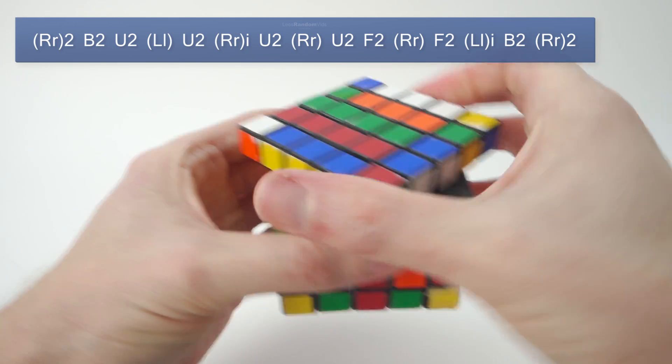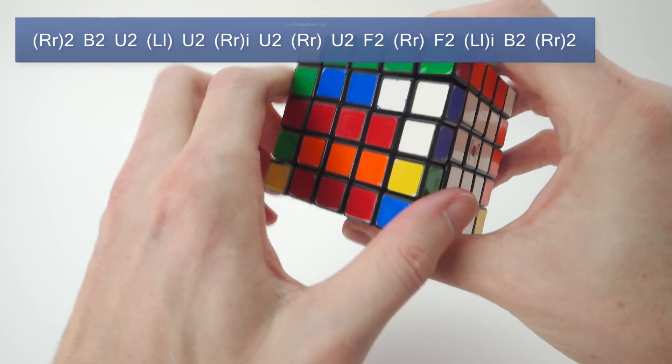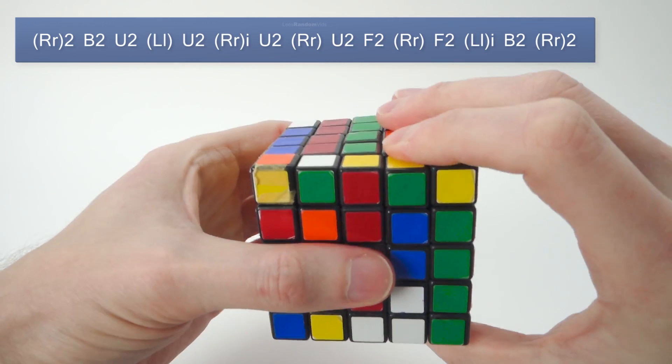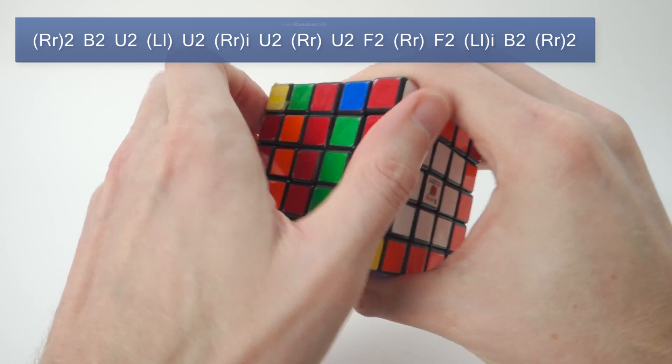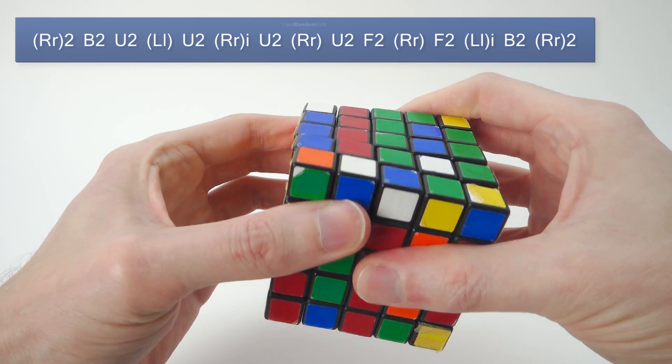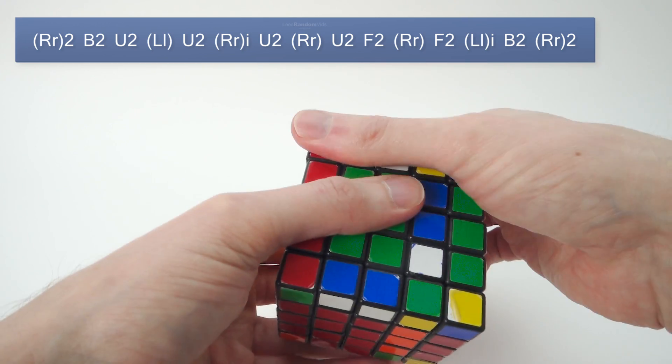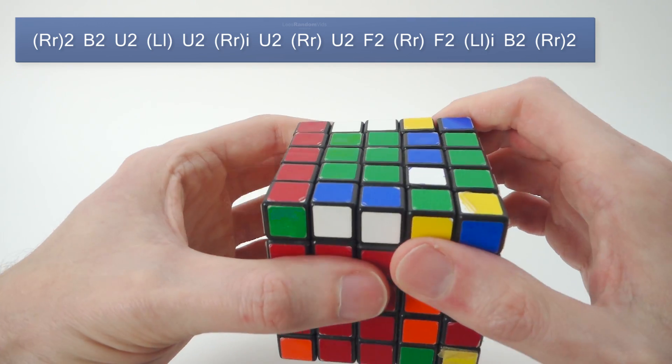U2, F2, double R in brackets, F2, double L in brackets inverse, B2, B2 double R in brackets 2.